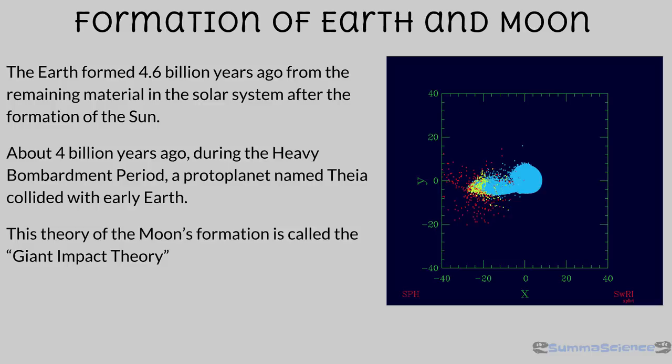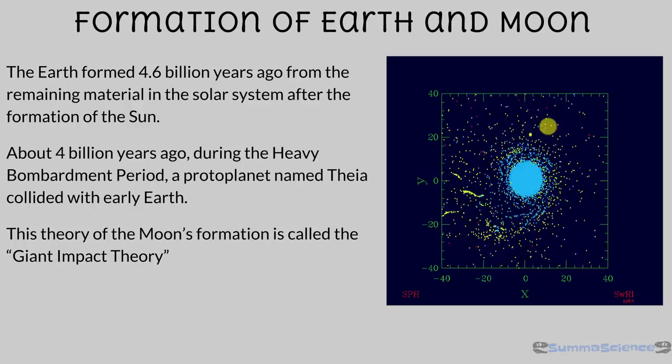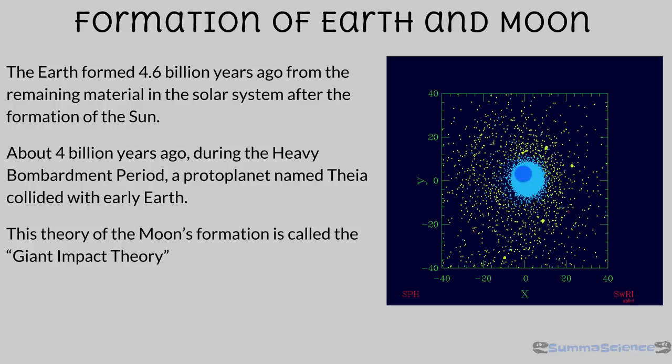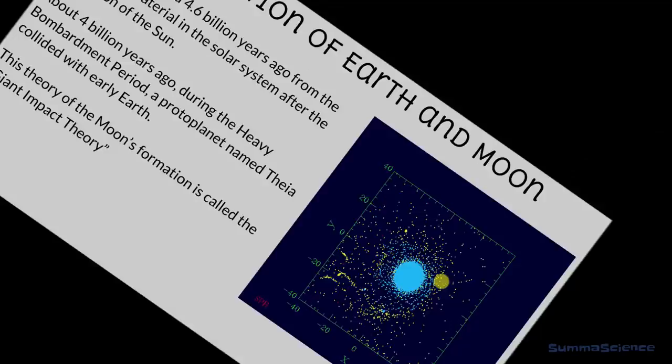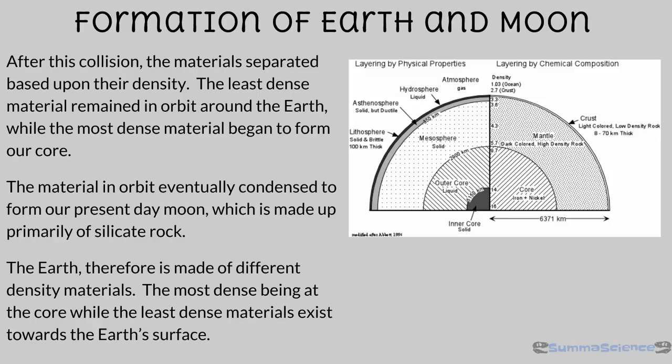As you can see in the animation to the right, there's different colored material — blue material made up of more dense material, and yellow and red material of less dense material. The blue material sinks towards the middle, and the yellow and red material stay along the outside perimeter of earth, as well as in space, which would eventually condense to form our moon several million years later. These materials begin to cool and order themselves based upon their density, with the highest density material gravitating towards earth's core.